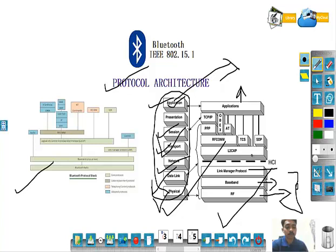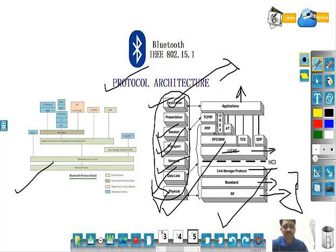The next important layer is L2CAP — Logical Link Control and Adaptation Protocol. It adapts upper-layer protocols to the baseband layer and provides both connectionless and connection-oriented services. Above that is SDP — Service Discovery Protocol — which allows device information and service characteristics to be queried, enabling the establishment of connections between two or more Bluetooth devices.